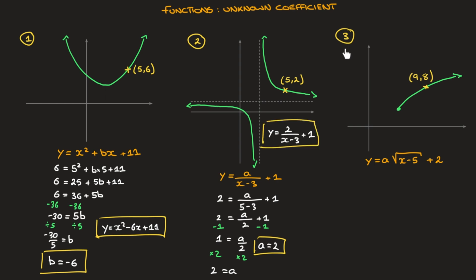Let's look at this third and final example. We're given this curve and its equation is y equals a times the square root of (x minus 5) plus 2, and we need to find the unknown coefficient a. Looking at the information we have, we can see that this curve passes through the point with coordinates (9, 8). So to find a, all I have to do is replace any x by 9 and y by 8.